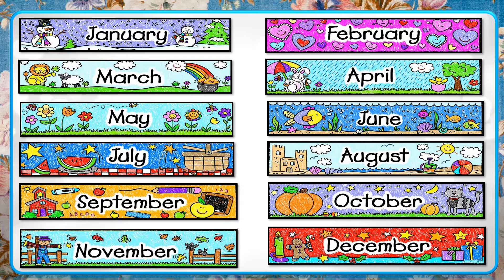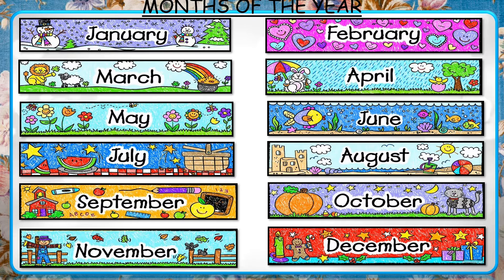There are 12 months in a year. And these are the months of the year: January, February, March, April, May, June, July, August, September, October, November and December. These are the months of the year, and there are 12 months in a year.